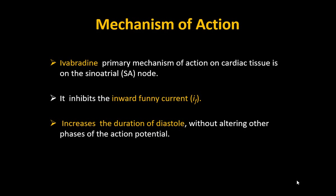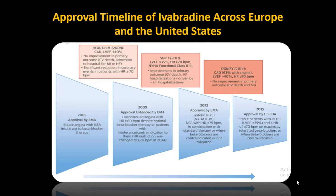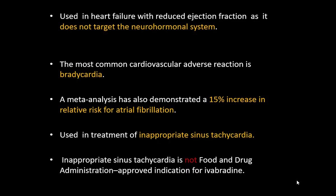Ivabradine acts specifically on the SA node as a funny channel (If channel) inhibitor — it increases the duration of diastole without altering other phases of the action potential. FDA-approved in 2015 for heart failure with reduced ejection fraction. It does not target the neurohormonal system. The most common cardiovascular side effect is bradycardia, and it has been associated with a 15% increased risk of atrial fibrillation. It is used in inappropriate sinus tachycardia, though this is not an FDA-approved indication.